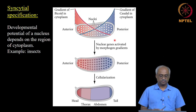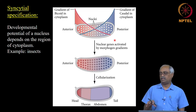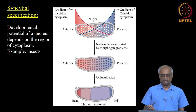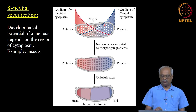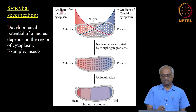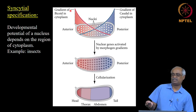What a particular nucleus develops into depends on where in this concentration gradient of asymmetrically distributed molecules it sits. This is called syncytial development. A syncytium is defined as multiple nuclei within a single plasma membrane-bound cytoplasm. The early Drosophila embryo is a syncytium, with rapid synchronous nuclear divisions and no cytoplasm separation; the position of the nucleus in the cytoplasm determines its developmental fate.